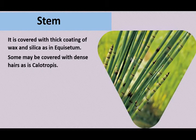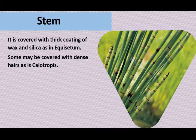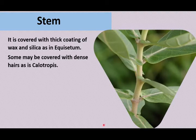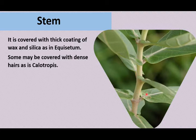The second morphological adaptation is seen in the stem. In xerophytes, we see a wide variety of stem adaptations. The surface of the stem is covered with a thick coat of wax and silica, which protects the plant from desiccation. In Calotropis, the leaves and stem are covered with dense fine hairs, or in most cases with a wax layer.